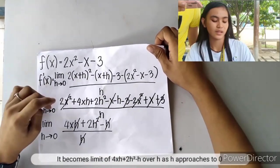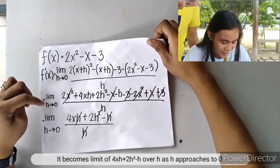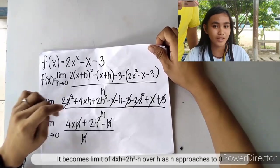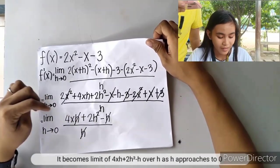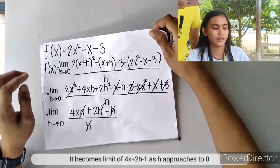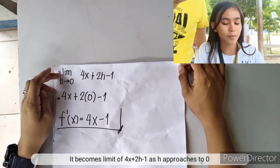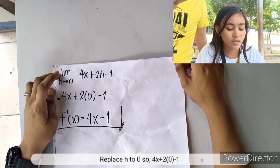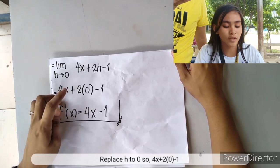We get the limit of 4xh plus 2h squared minus h over h as h approaches 0. Then cancel h, giving the limit of 4x plus 2h minus 1 as h approaches 0. Replace h with 0.